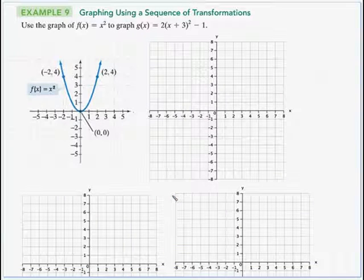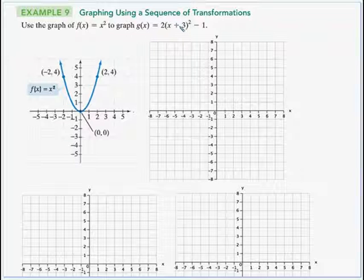So let's see what's happening here. Graph using a sequence of transformations. Okay, here, they're giving us the basic squared function, the parabola. 0, 0. Again, 1 squared is 1. 2 squared is 4. Negative 2 squared is also 4. So there's our parabola.